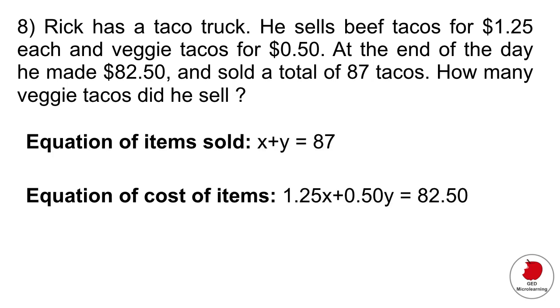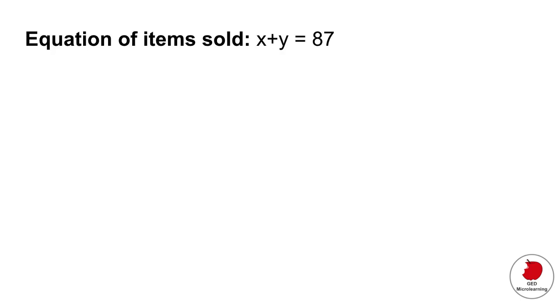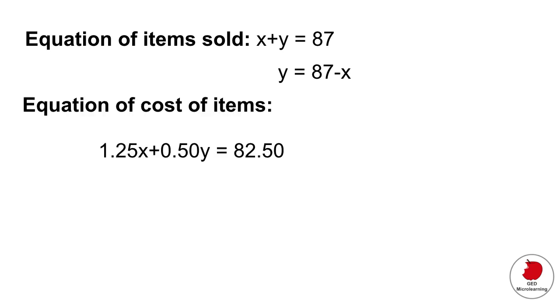That's the equation of items sold. And then we would add the cost. We know that each beef taco, so each X is $1.25. And then we know that the veggie tacos are 50 cents and altogether he sold $82.50. So you would write your equation for the cost of the items, as you can see there in the bottom. The price multiplied by X, which is the number of items sold. So what we're going to do is, since we want to find out Y, which is the veggie tacos, we write our equation like that. We're going to rewrite it like this.